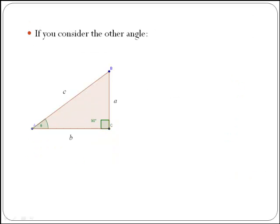What if you now consider the other angle, which would be this angle here that we can call alpha? Then we can also describe sine of alpha, cos of alpha, and tan of alpha.